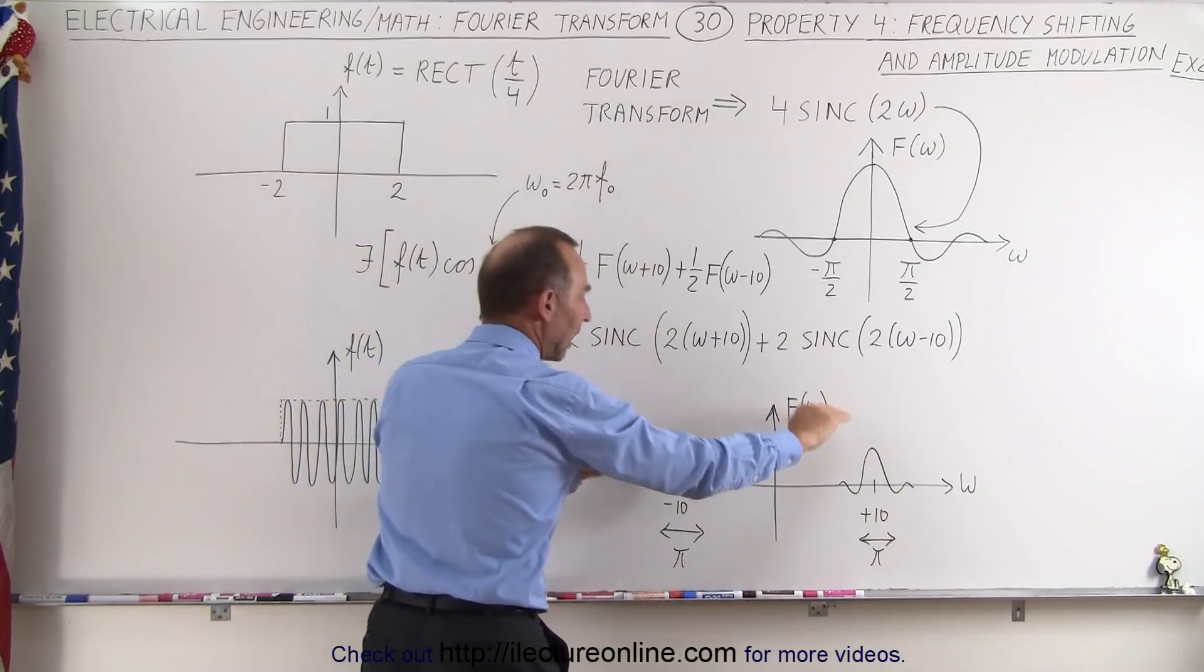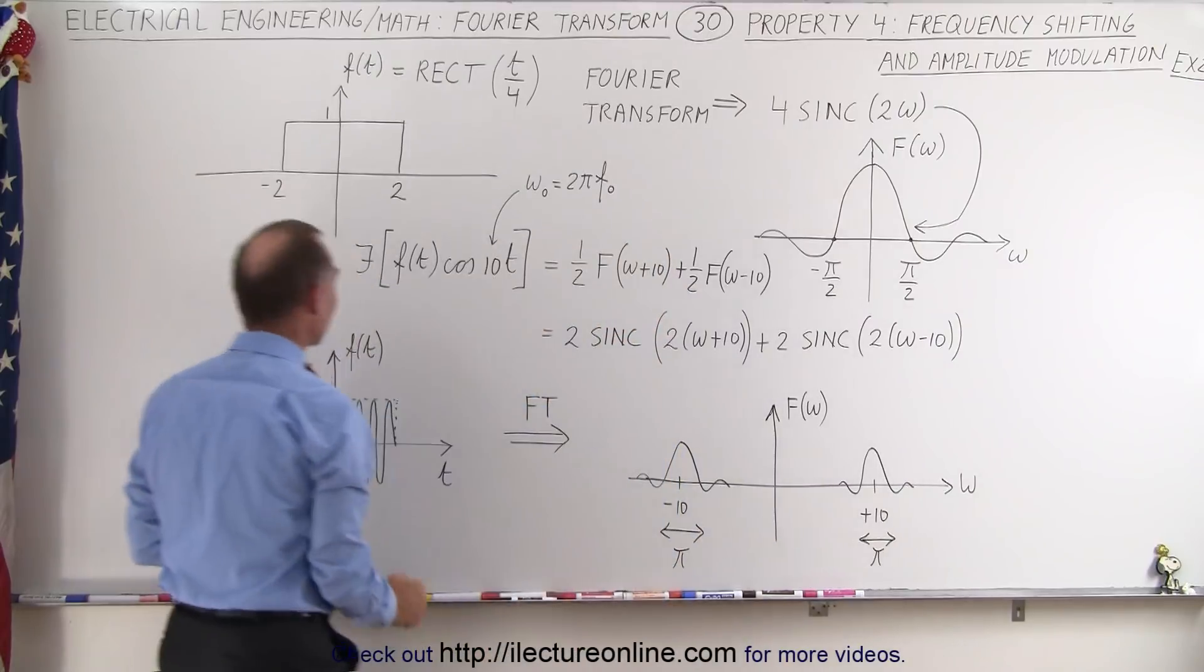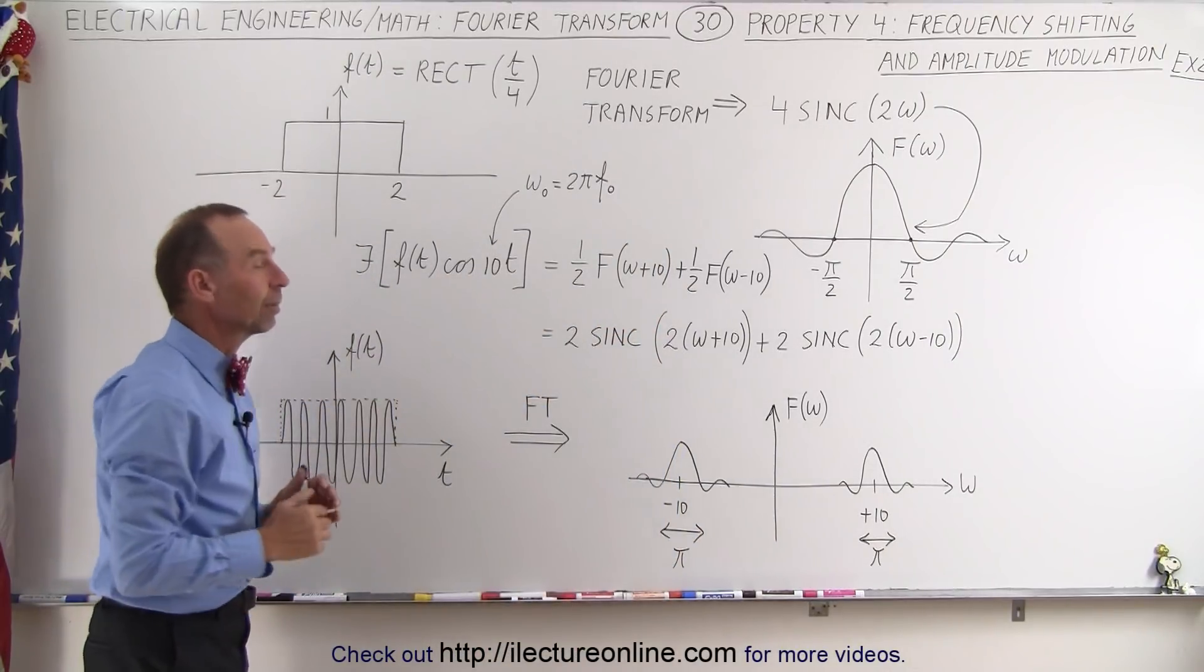we then have only half the amplitude but with the correct shift based upon the function we're multiplying it with.